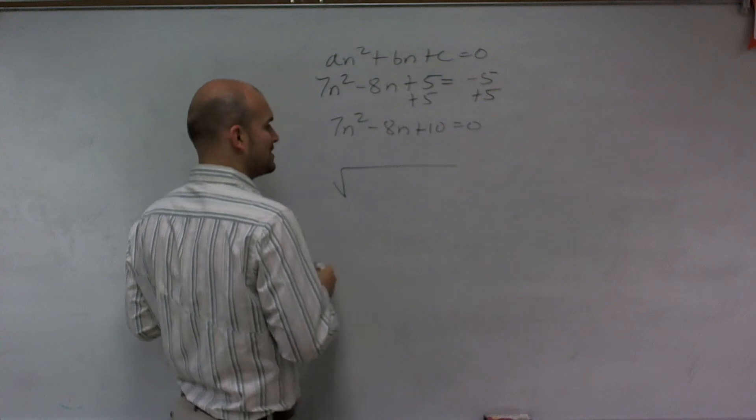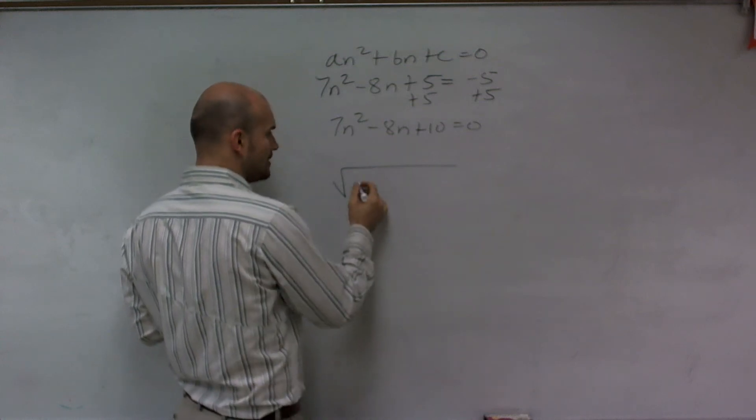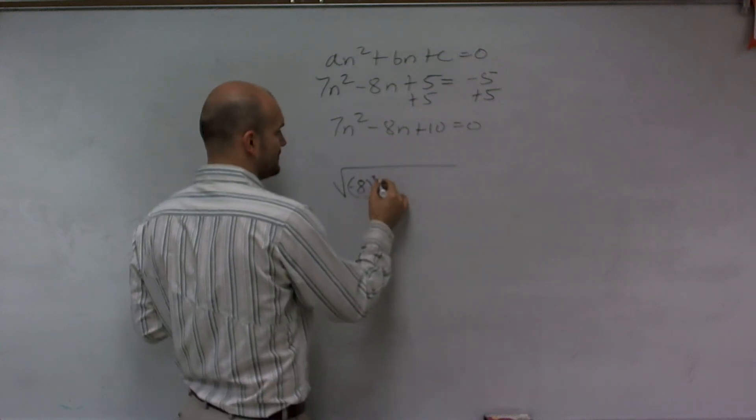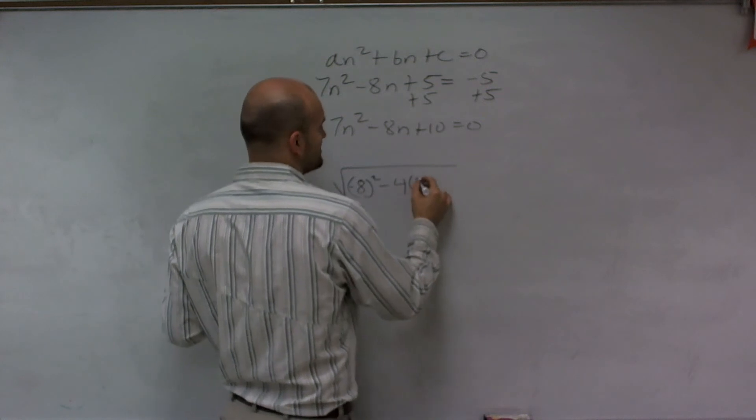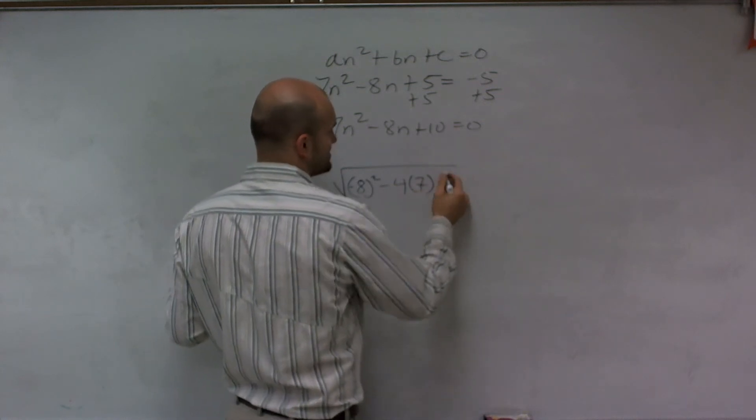So the square root in the quadratic formula says b squared, which is negative 8, minus 4 times a times c, which is 10.